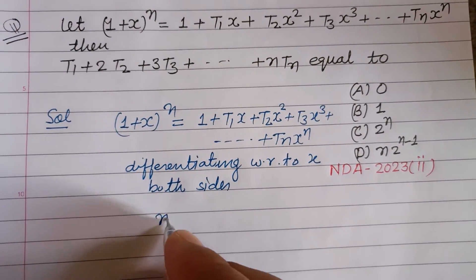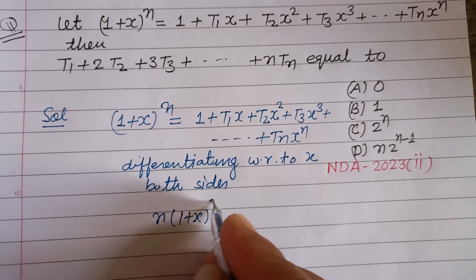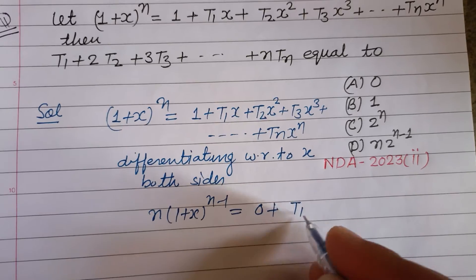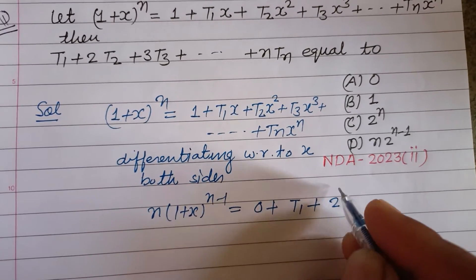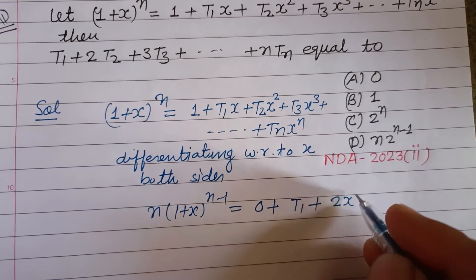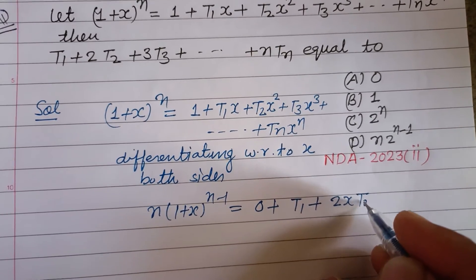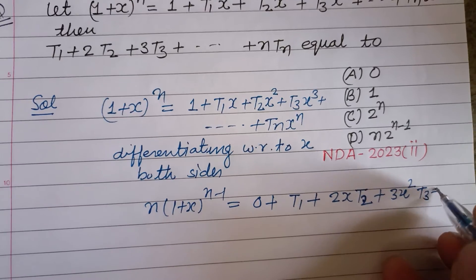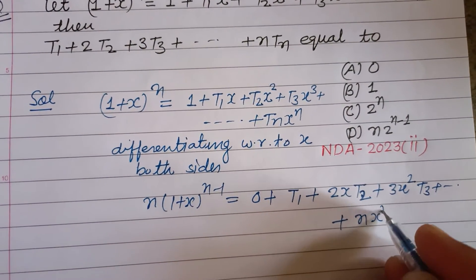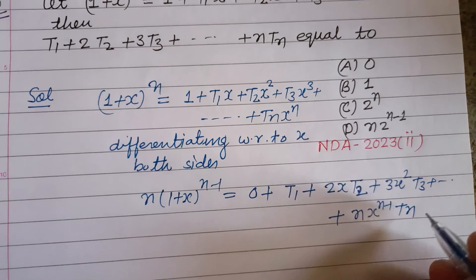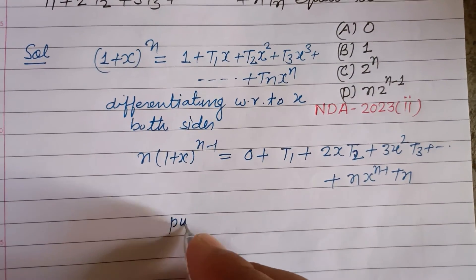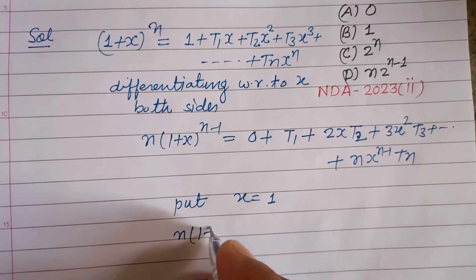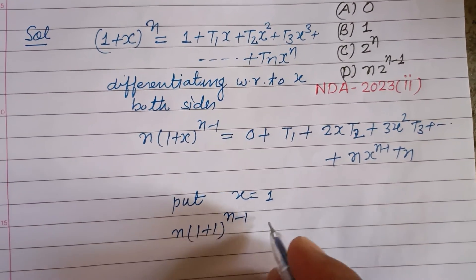So this will be n(1+x)^(n-1). On the right side, this is T₁, then 2x·T₂, then 3x²·T₃, and so on, up to nx^(n-1)·Tₙ.